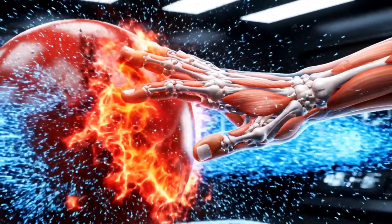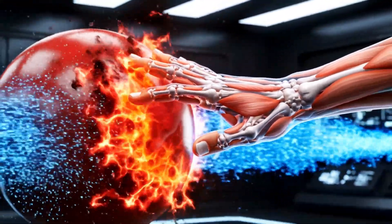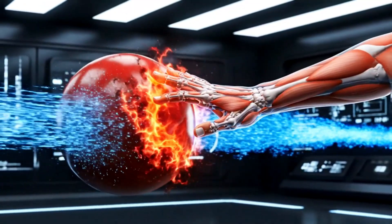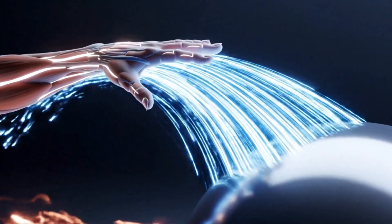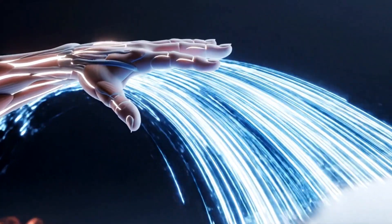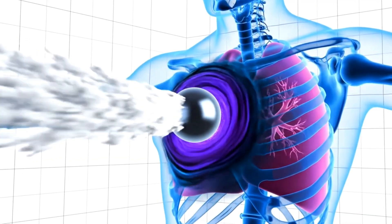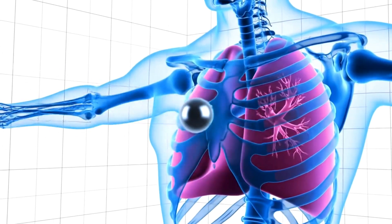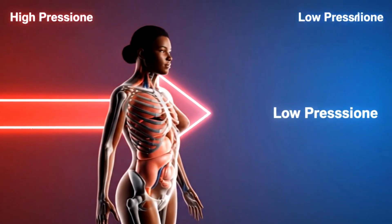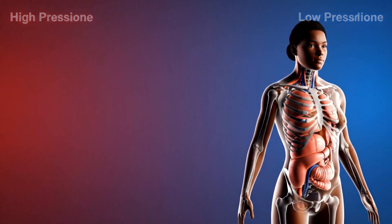On one side, the spinning ball's direction is opposite the airflow, creating resistance and high pressure. On the other side, the spin and the airflow are moving in the same direction, allowing the air to move faster. Faster moving air means there is lower pressure on that specific side — a fundamental principle of fluid dynamics. The ball is always pushed from the area of high pressure toward the area of low pressure.